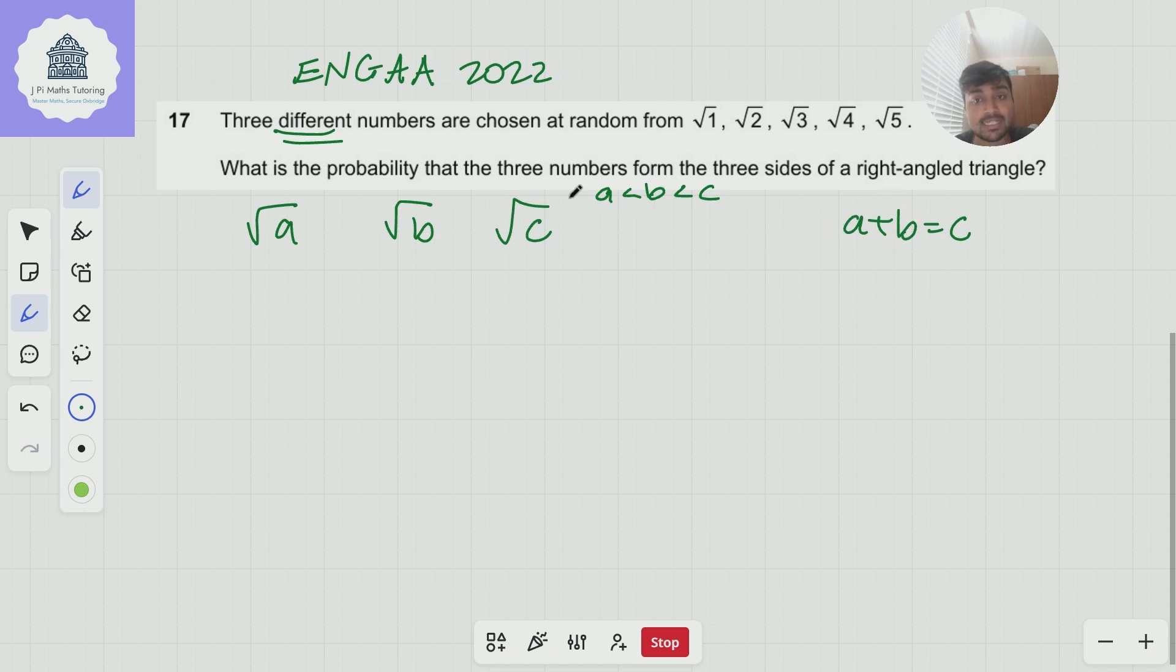But what we also must check is if we have this condition does it genuinely form a right angled triangle? You know does it satisfy the triangle inequality? And I guess maybe you could argue that well if it satisfies this it must because Pythagorean triples must satisfy the triangle inequality but let's just check to be safe.